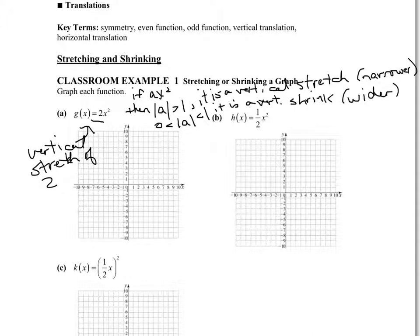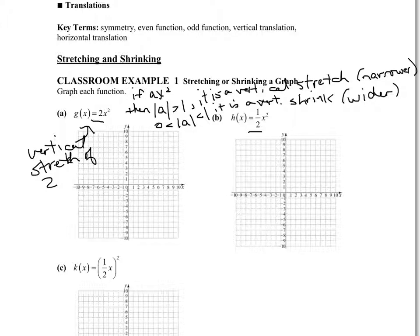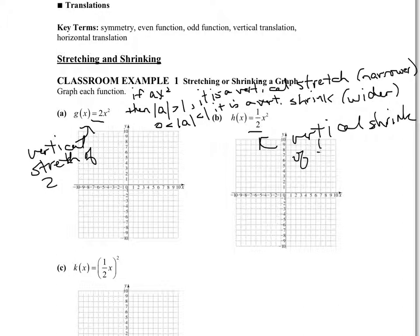I will not ask you to graph it — I will only ask you to explain what the transformation is, or possibly to look at some different graphs in a multiple choice format and choose the one that matches. Moving to example b, the coefficient value is one-half, which happens to be between zero and one, so this is a vertical shrink of one-half. That's what the coefficient in front of the entire function tells us.